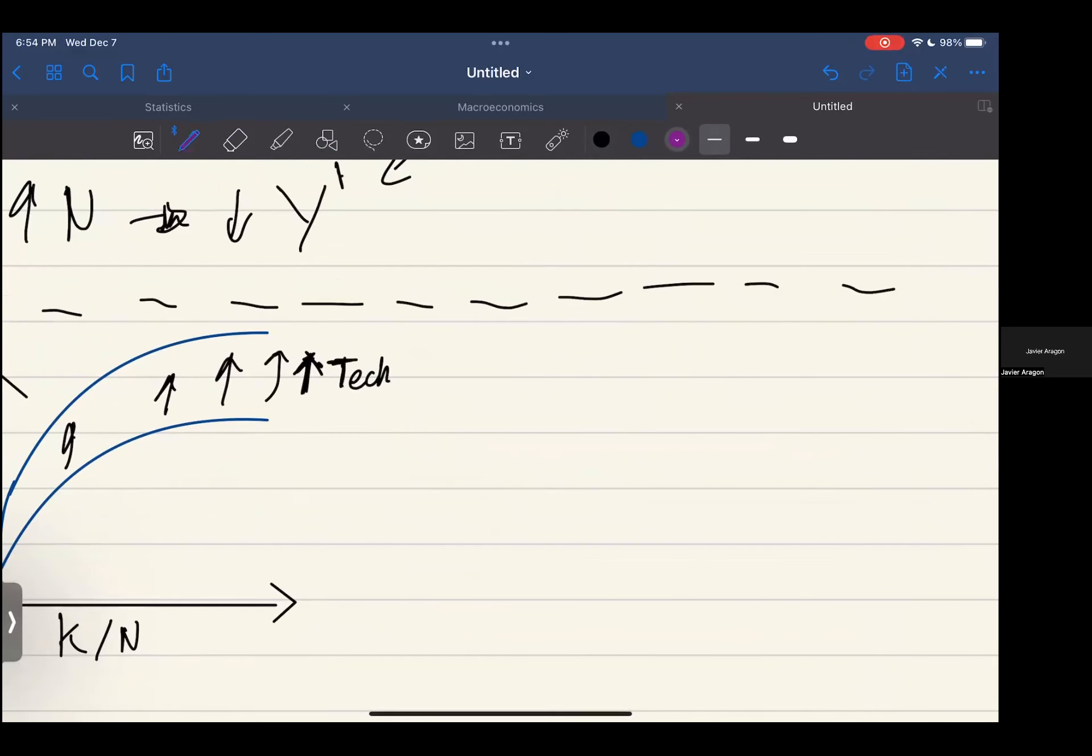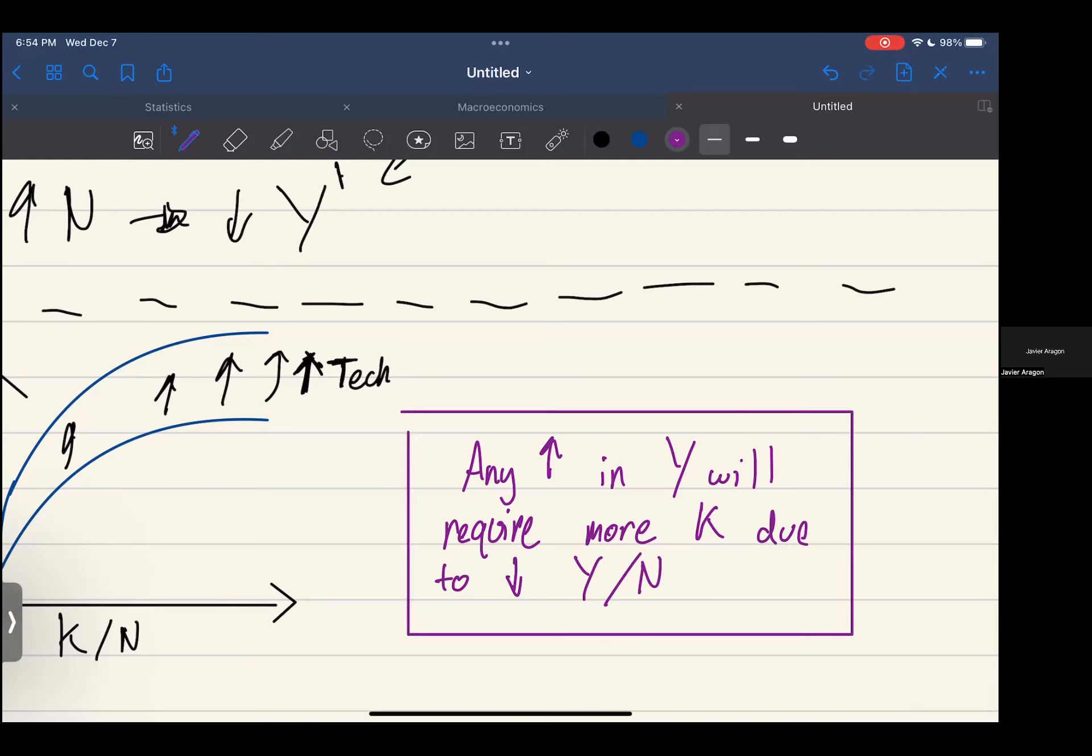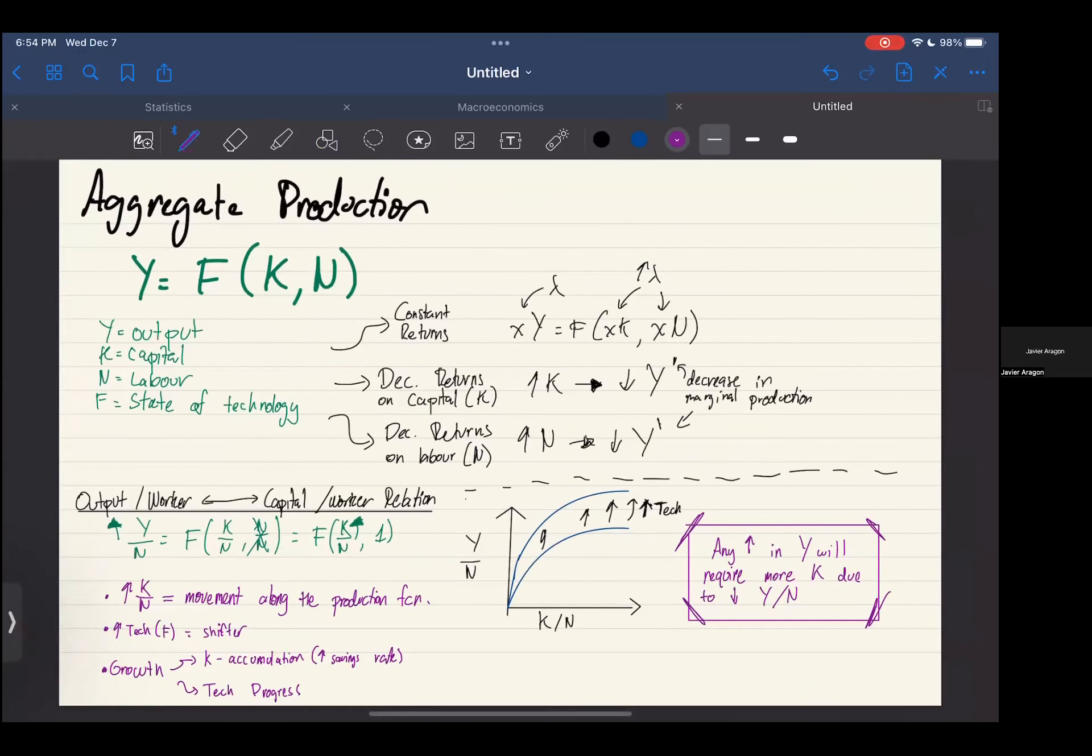And here I had a little note in my own notes which I'm going to write down. Any increase in Y, aka output, will require more capital due to decrease in output per worker. This is a little relationship you can remember. This just exemplifies your decreasing marginal returns per worker. And that's it, that is Chapter 10.